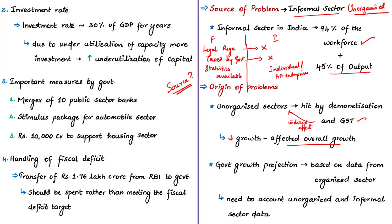This slowdown in the informal sector is not being captured in government data because the government captures only organized sector data. For estimating advanced annual and quarterly estimates, the government uses the latest estimates of agricultural production, Index of Industrial Production, and performance of key sectors like railways, transport, communication, banking, insurance, and government revenue expenditure. Except for agriculture estimates, every other estimate belongs to the organized sector. Similarly, annual estimates use organized sector data from mining, banking, hotels, restaurants, and transport. Even construction data is derived from organized sector production like steel and glass.